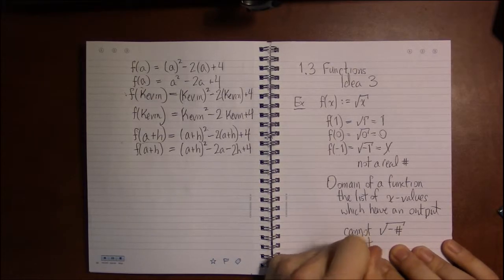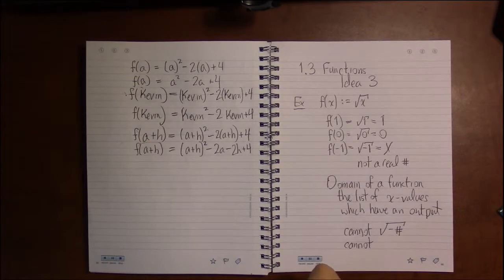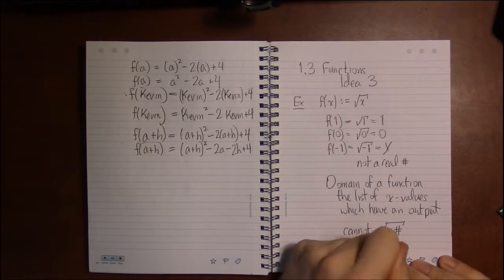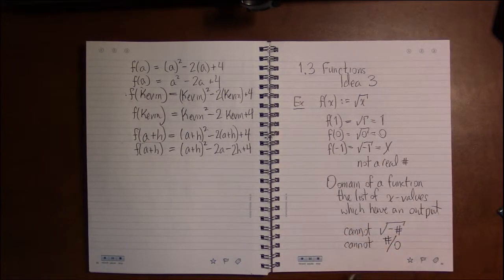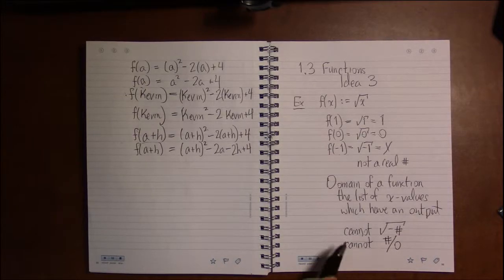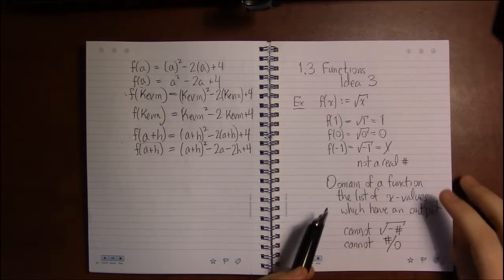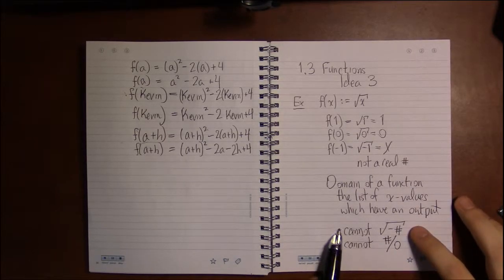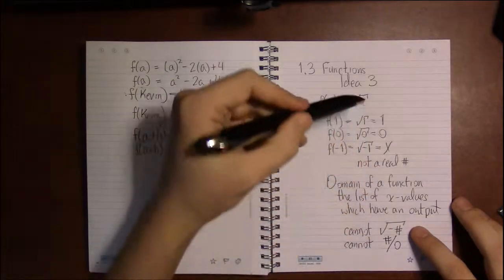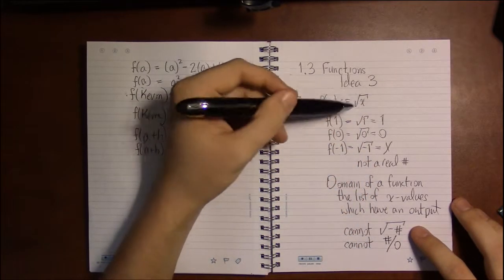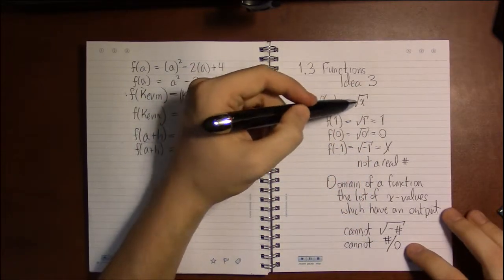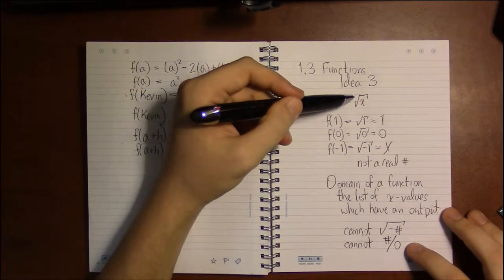The only other thing that we know about so far is that you can't divide by zero. So when we're looking at domain, what we want to be looking for is, is it possible that we could take square roots of negative numbers? Is it possible that we could be dividing by zero?